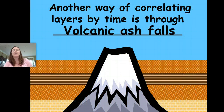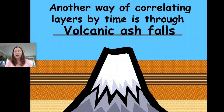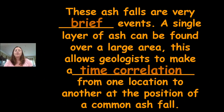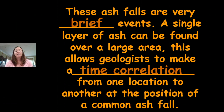Another way we can correlate layers is by looking at volcanic ash eruptions, because that creates its own distinct layer within the rock strata. These ashfalls are very brief events — a single layer of ash can be found over a large area — and this allows geologists to make a time correlation from one location to another based on the position of a common ash fall. Geologists can also use the known timeline of volcanic events to help determine when a volcanic eruption occurred.